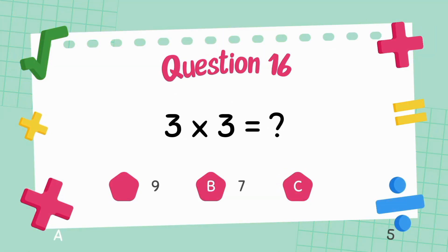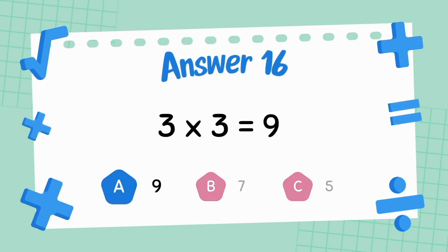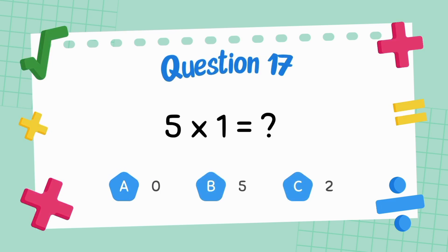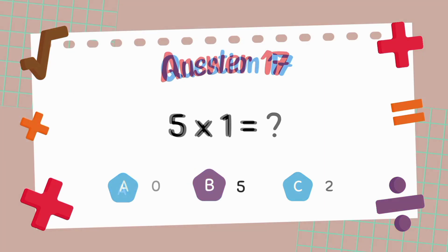What is three multiply three? The answer is nine. What is five multiply one? The answer is five.